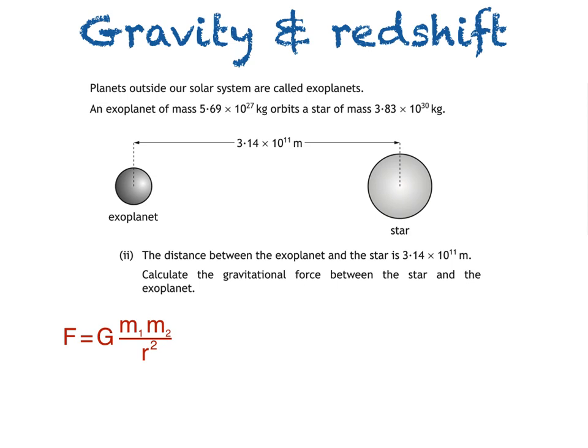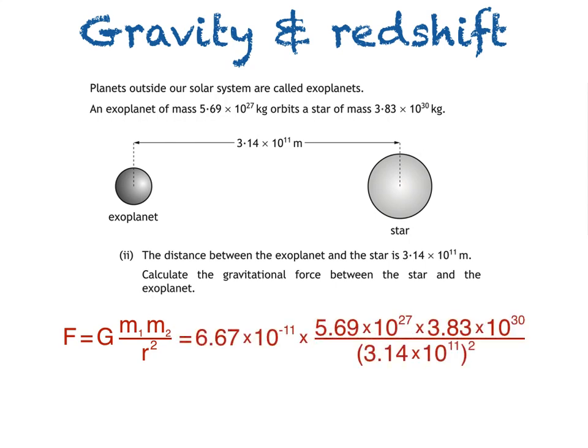So, substituting our values into the equation, we get 6.67 times 10 to the power of negative 11, times 5.69 times 10 to the power of 27, times 3.83 times 10 to the power of 30, all divided by 3.14 times 10 to the power of 11 squared. Which — and I'm sure you can easily work this out in your head — gives an answer of 1.47 times 10 to the power of 25 newtons. To be fair, maybe you should just check that one with a calculator.